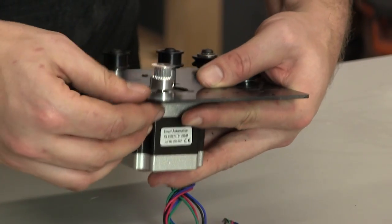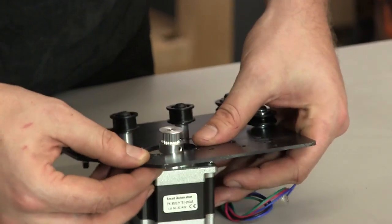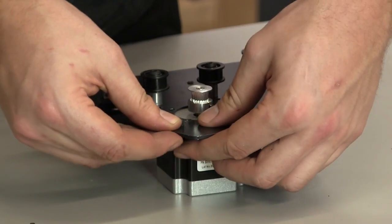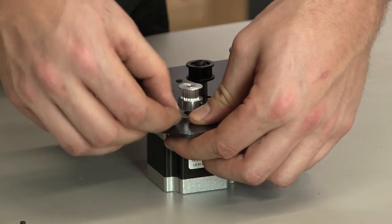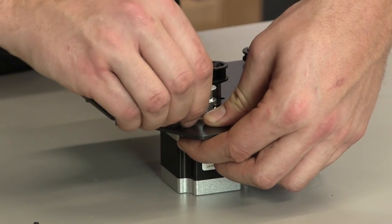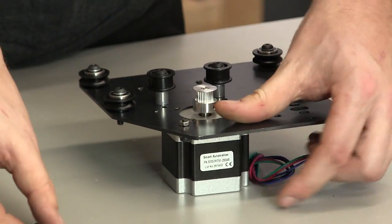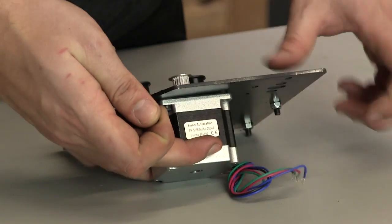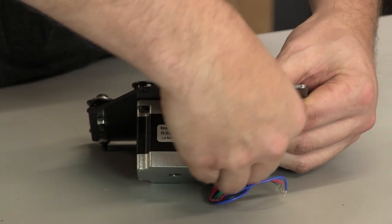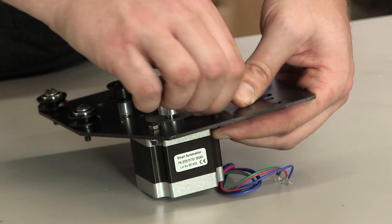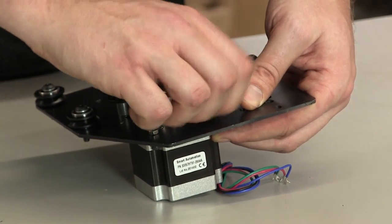Now we're going to use four screws and four nuts to attach this motor to the plate. Insert the screws through the motor and then finger tighten the hex nuts.